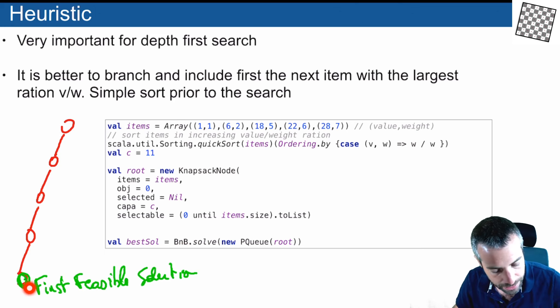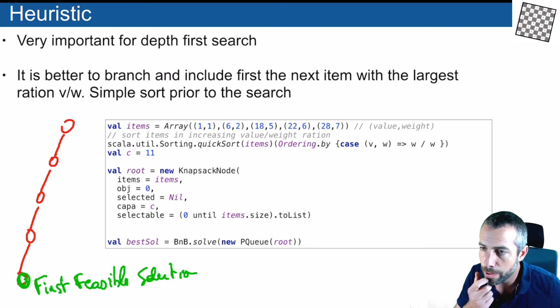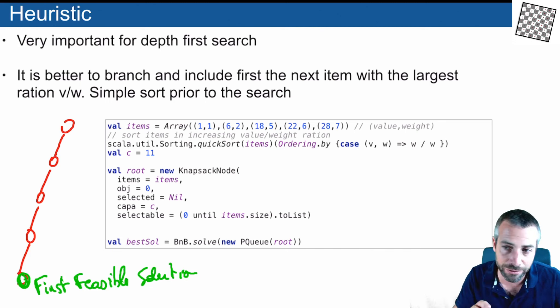How to make this first feasible solution good? The way to do it is to implement what we call a heuristic. We will not put the left and right nodes arbitrarily. We will try to put the most promising node to the left and the less promising node to the right. The most promising node to the left for the knapsack problem means probably to select an item with an interesting value, because you want to maximize the amount of value that you have added.